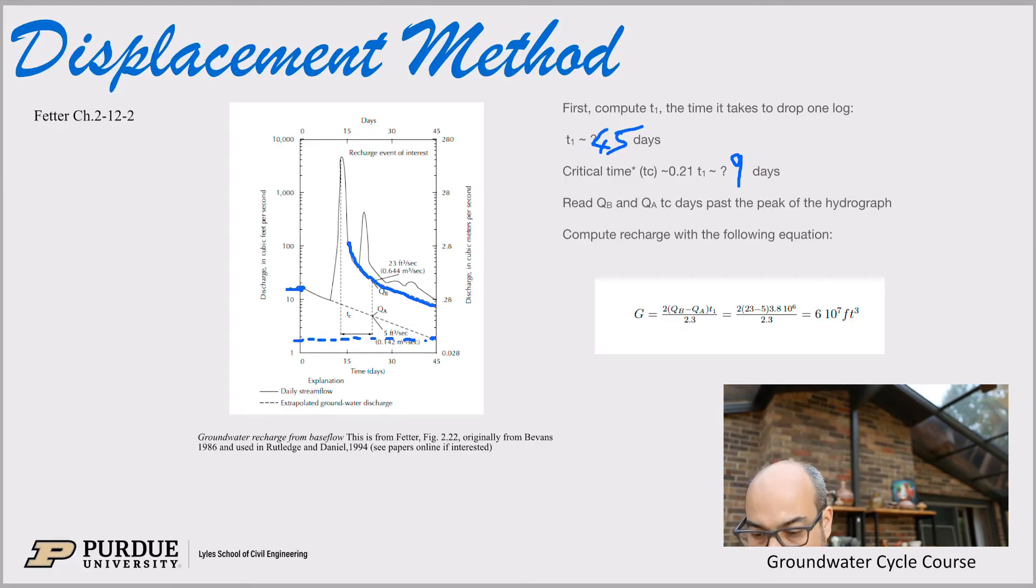So once you have QA, which is, again, you read on the first base flow recession. And then QB on that new recession, now you have two different discharges.